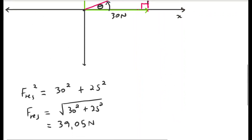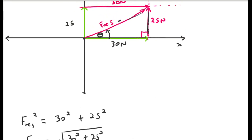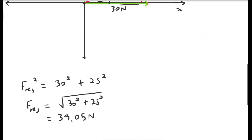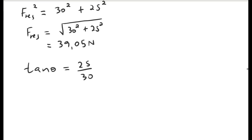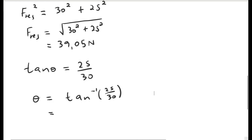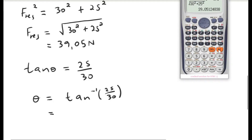Looking at the triangle, the 25 newton side is opposite to theta, and the 30 newton side is adjacent to theta. Opposite over adjacent is tangent, so tangent of theta equals 25 divided by 30. To get the magnitude of theta, we use the inverse tangent: theta equals tan inverse of 25 over 30.